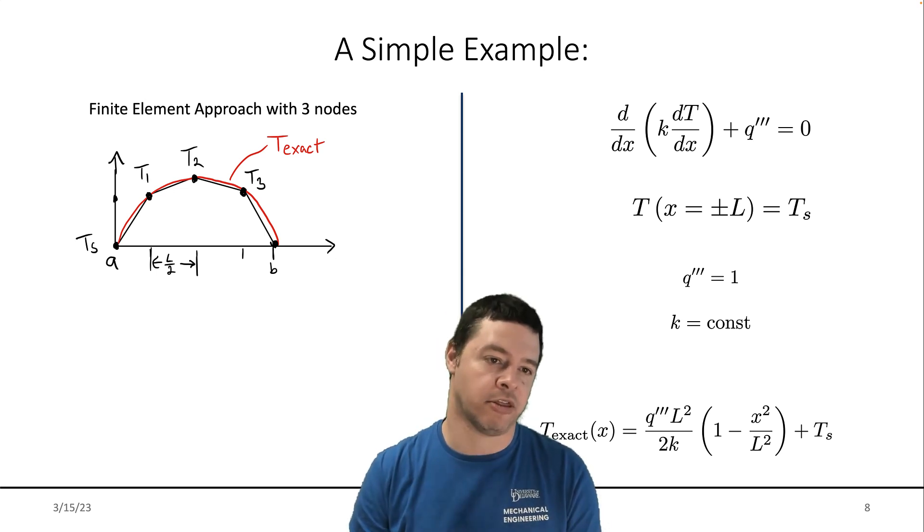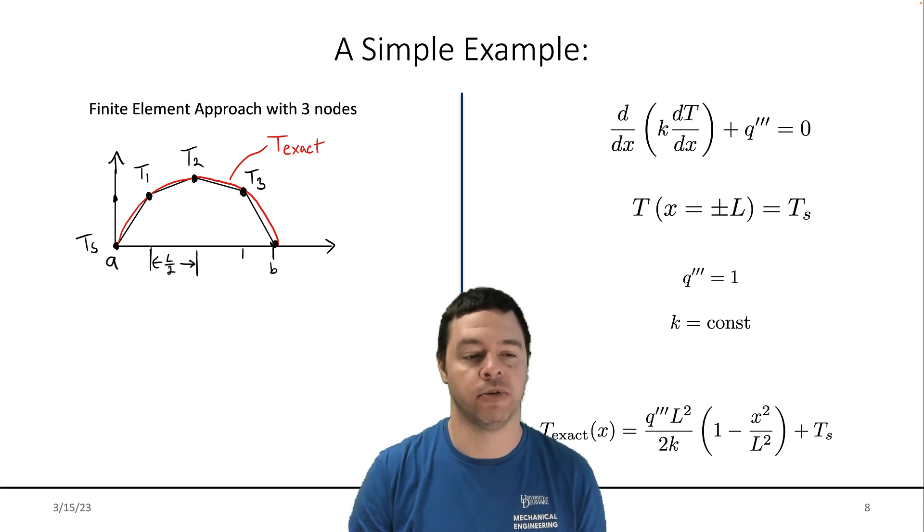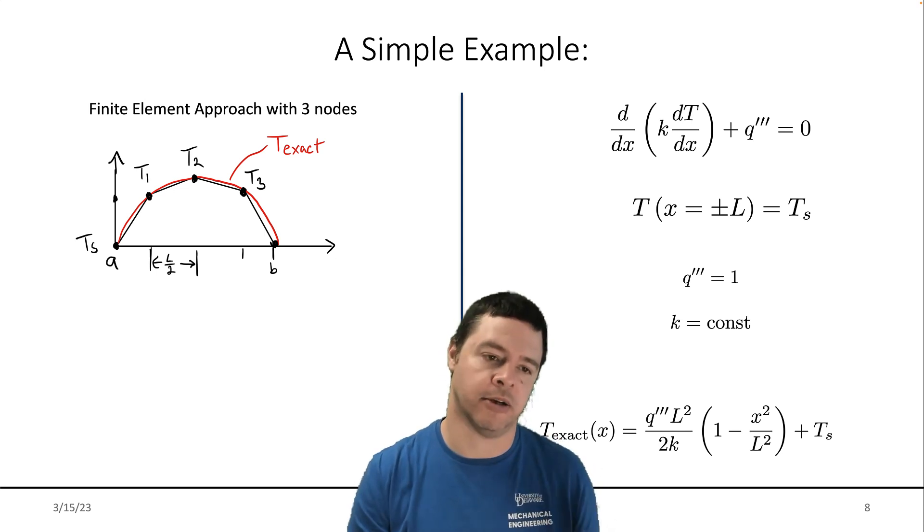That means that since I've got three nodes, there's four intervals. That means that each interval has length, or the each interval distance if they're evenly spaced is L over two since it goes from minus L to plus L.